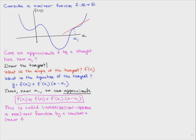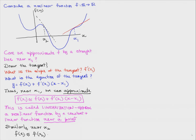For example, near a point x2 like that, we can approximate it by the tangent there, whose equation is f of x2 plus f prime of x2 times x minus x2. So we get the idea there.